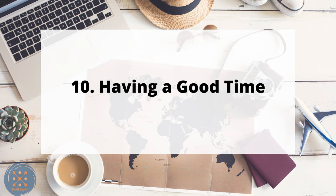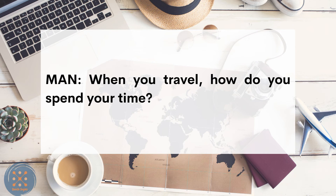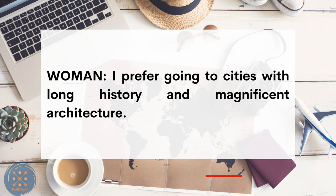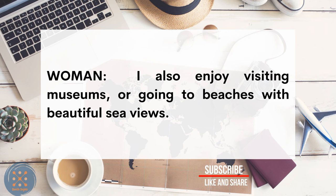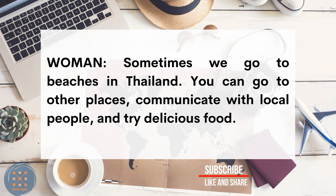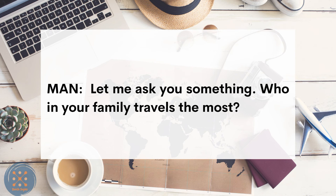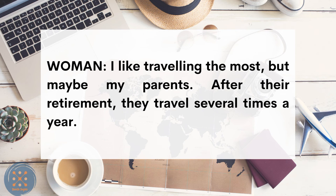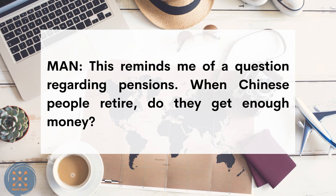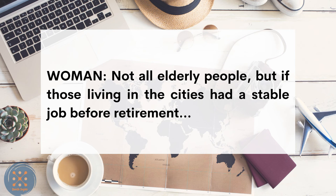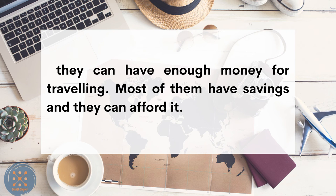Having a Good Time. When you travel, how do you spend your time? I prefer going to cities with long history and magnificent architecture. I also enjoy visiting museums or going to beaches with beautiful sea views. Sometimes we go to beaches in Thailand. You can communicate with local people and try delicious food. Who in your family travels the most? Maybe my parents — after their retirement, they travel several times a year. When Chinese people retire, do they get enough money? If those living in cities had a stable job before retirement, they can afford to travel. Most have savings.